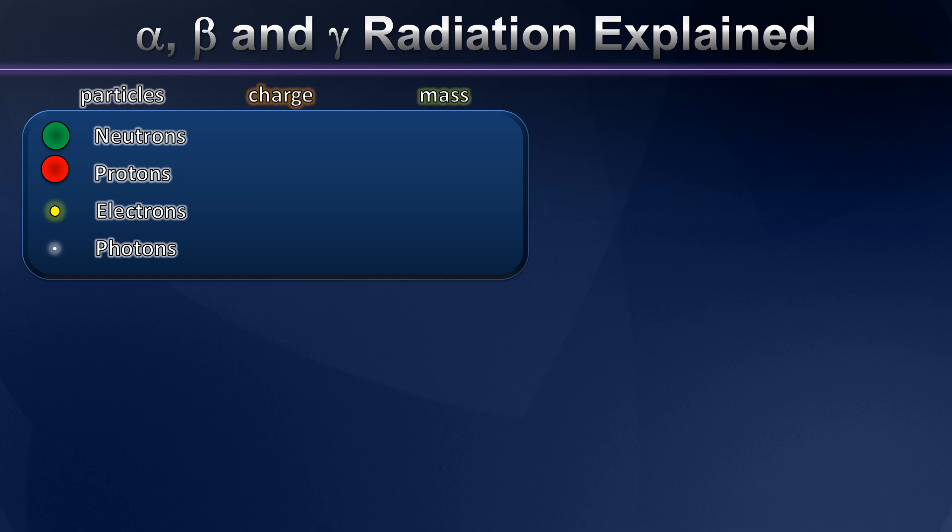So let's think about all four of these in terms of their charge and their mass. Neutrons of course are neutral with a charge of zero. Protons we know have a charge of plus one, electrons of minus one, and photons we can think of as having no charge at all. Neutrons have a mass of 1.008701 atomic mass units, and protons are not far behind at 1.007316 atomic mass units.